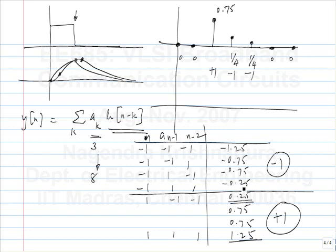One thing to notice: between the ideal channel where you receive plus 1 volt when you transmit plus 1 volt, and this channel, there is a big reduction in the symbol value. Also the error curve versus the variance of noise is quite non-linear - it drops quite drastically. Here you go from a Q value of 7 to a Q value of 1.75, and the bit error rate will probably go to 10 to the minus 3 or 10 to the minus 2. So what can we do to fix this?